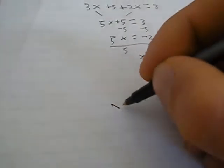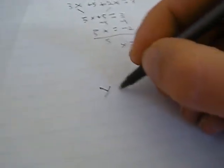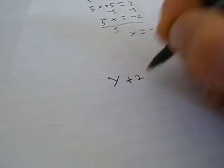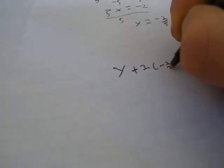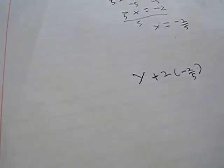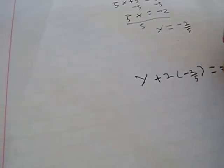So now we will have y plus 2 times negative 2 fifths is equal to 3.